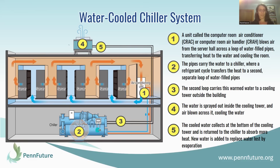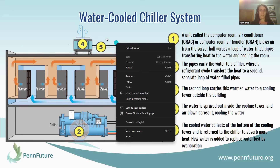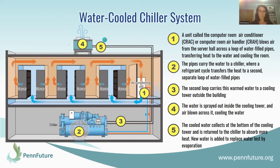The water then circulates down into the chiller, and inside the chiller there is a refrigerant cycle that takes the heat from this loop of water and transfers it to a separate loop of water — so these two water loops do not mix. Once the heat is transferred to this second loop of water, it gets pumped outside the building into a cooling tower. The loop of water from the server room has now cooled down due to this cycle, so the cool water is pumped back into the air conditioning unit, and the cooled air is blown into the server room where it cools down the servers.